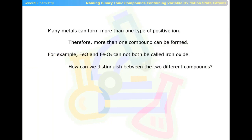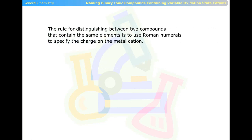Many metals can form more than one type of positive ion. Therefore, more than one compound can be formed. For example, FeO and Fe2O3 cannot both be called iron oxide. The rule for distinguishing between two compounds that contain the same elements is to use Roman numerals to specify the charge on the metal cation.